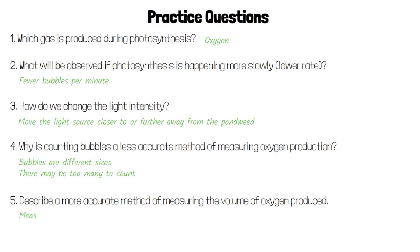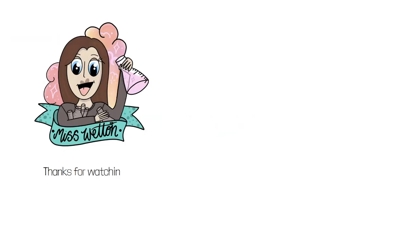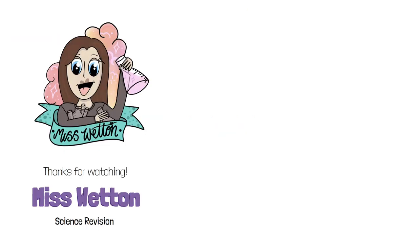A more accurate method of measuring the volume of oxygen produced would be to either place the pond weed under a funnel and measuring cylinder, or by connecting the flask to a gas syringe. I hope the video has been helpful for you, and I'll see you in the next one.